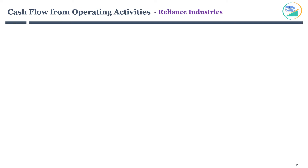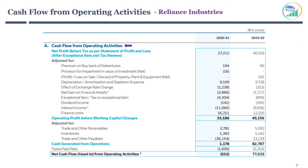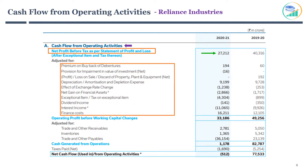Let's start with Cash Flow from Operating Activities. The first line always starts with Net Profit Before Tax. You will notice the Net Profit Before Tax amount is carried over from the Income Statement. Now it's time to adjust Profit Before Tax with various line items depending on cash entering or leaving the company. Please remember, the amount mentioned in brackets means cash leaving the company.